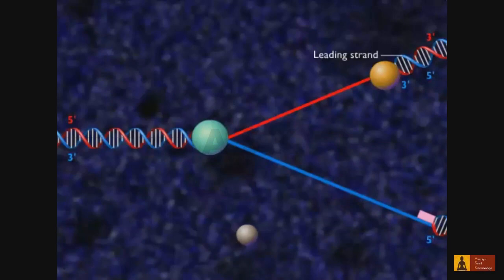Synthesis of the complementary strand, called the lagging strand, is more complex. DNA polymerase can add new deoxyribonucleotides only to a free 3' OH.